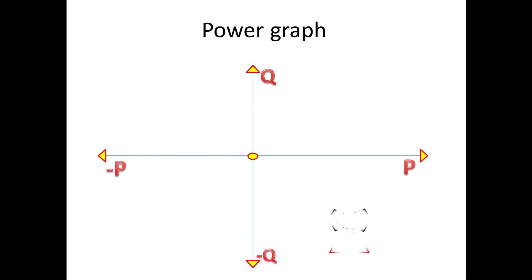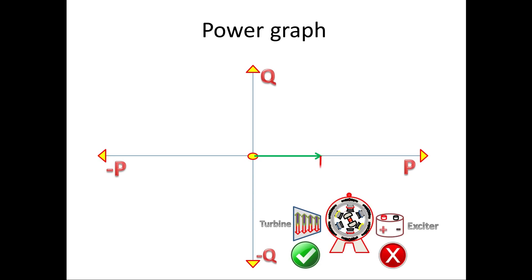Now we go for second case. In this case, the generator is working good and turbine is also good. So the generator is able to deliver power to grid. So P will be positive. Let us consider the exciter is not working.